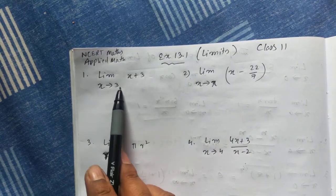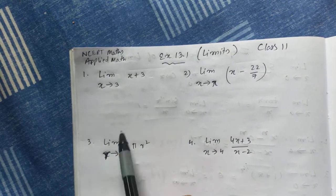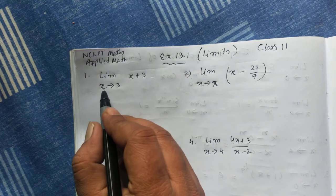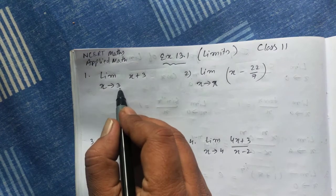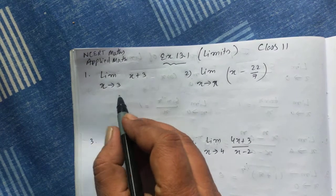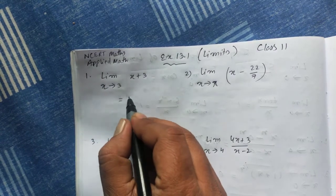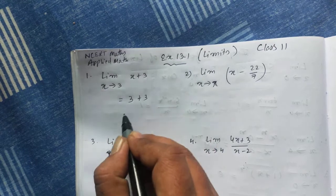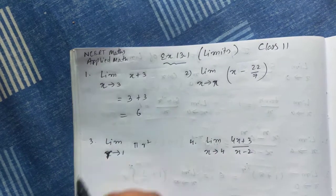Limit x tends to 3 of (x + 3). Since x tends to 3, we can just put the value 3 in place of x. You will get 6.